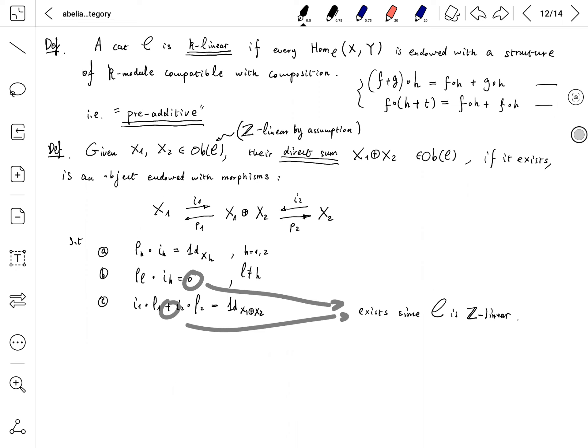First, endowed with morphisms: two embeddings and two projections. Name them I1, I2, P1, P2, satisfying the following conditions.